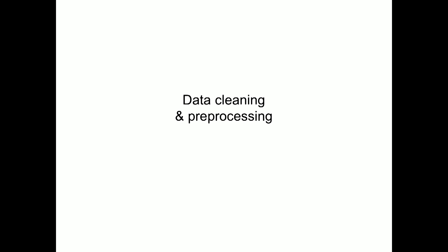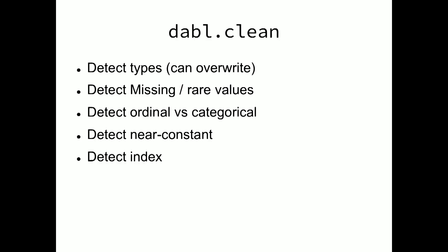I want to briefly talk through what these different functions do. For data cleaning and preprocessing, there's a single function. All of this library works on Pandas data frames. If you do data science in Python, you might be familiar with those. It's sort of just a standard table of data. The clean function will detect what are the types of data, what are missing and rare values. We'll detect ordinal variables, near constant values, detect indices, detect which features are useful and which are not, and give you some information about what was detected.